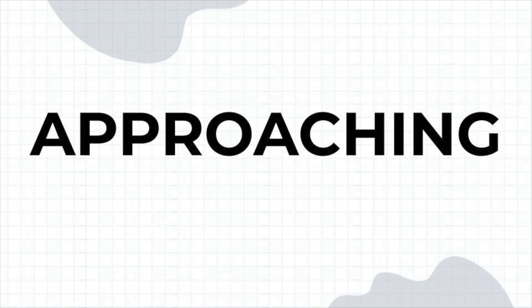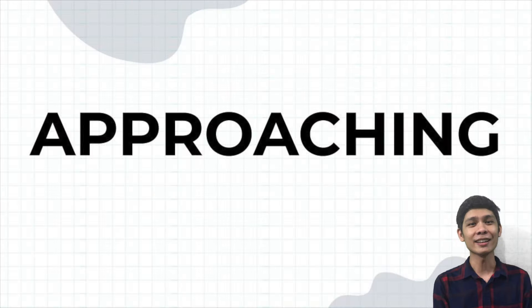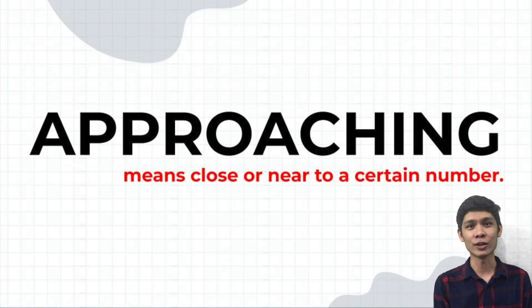To further explain the concept of approaching, let me give you an illustration. Imagine that you are going to watch a basketball game. When you choose seats, you want to be as close to the action as possible and have the best view of the game. Take note that you cannot be actually in the court and join the players, but you will be close enough to describe what's clearly happening in the game. In calculus, approaching means close or near to a certain number.